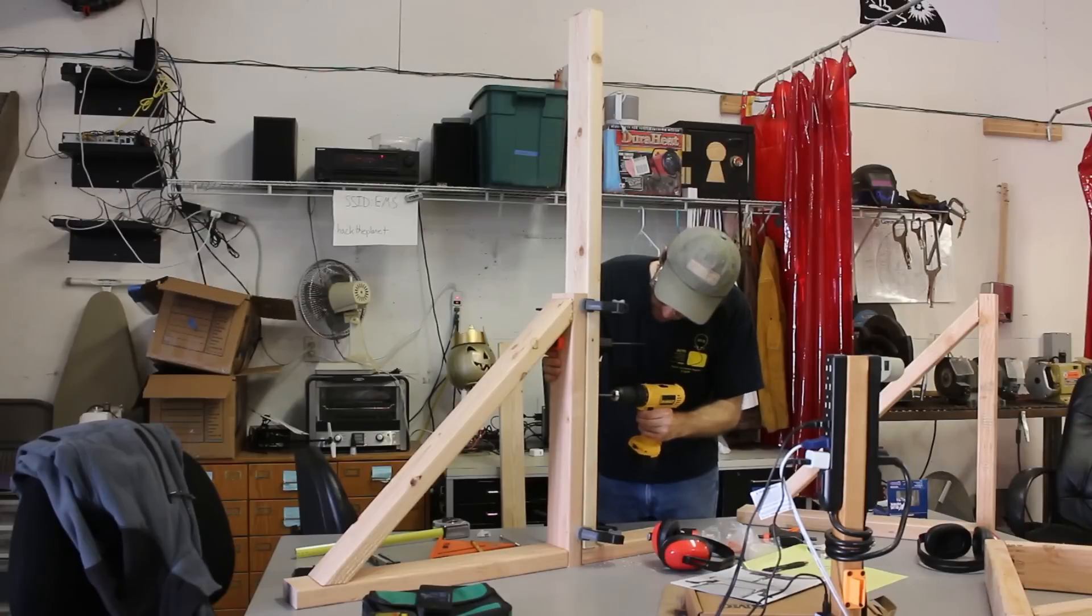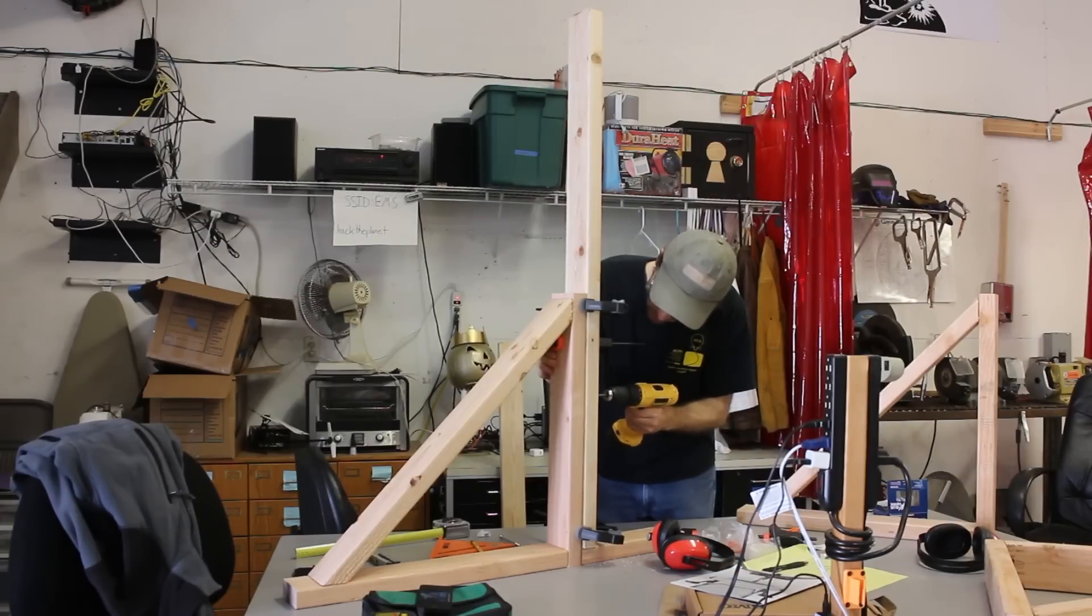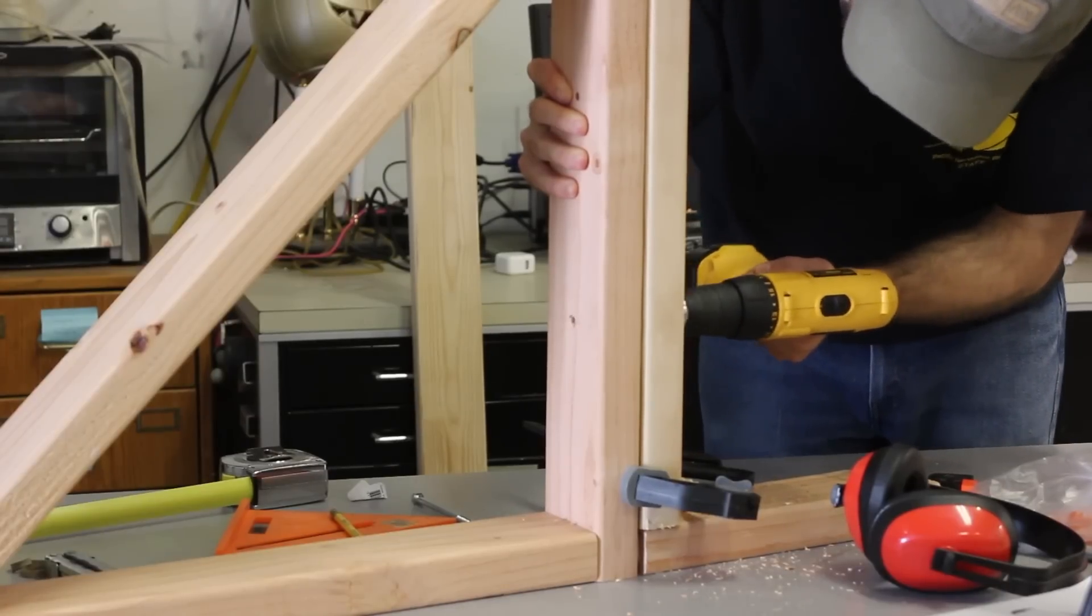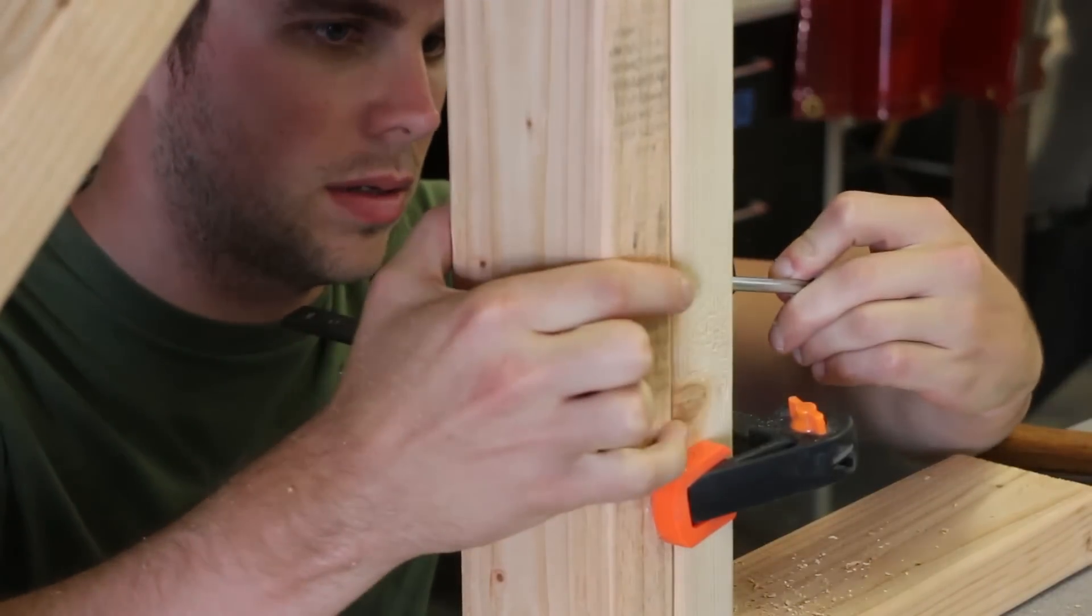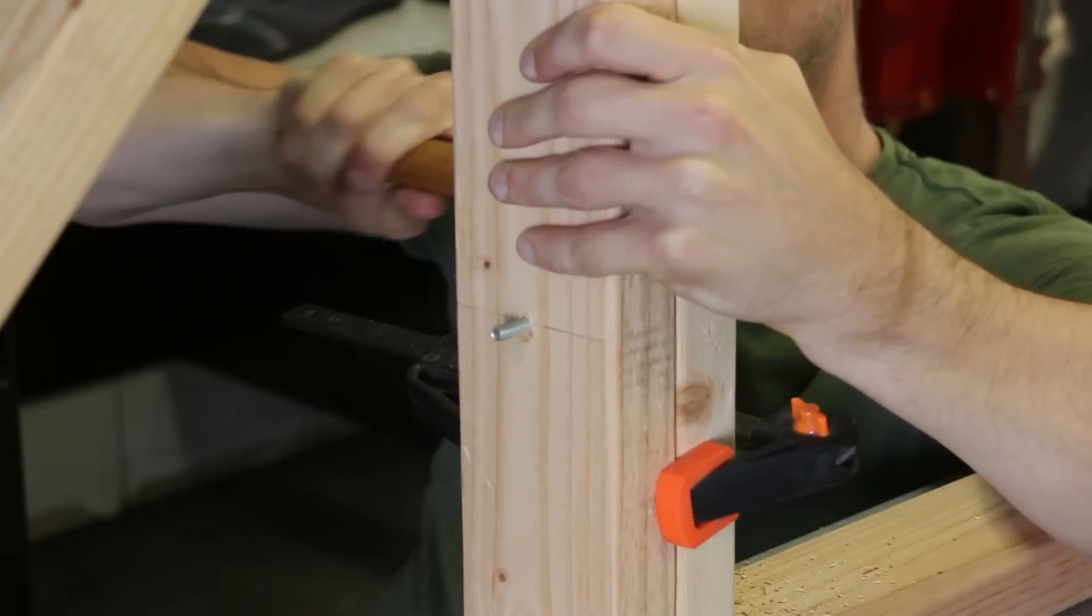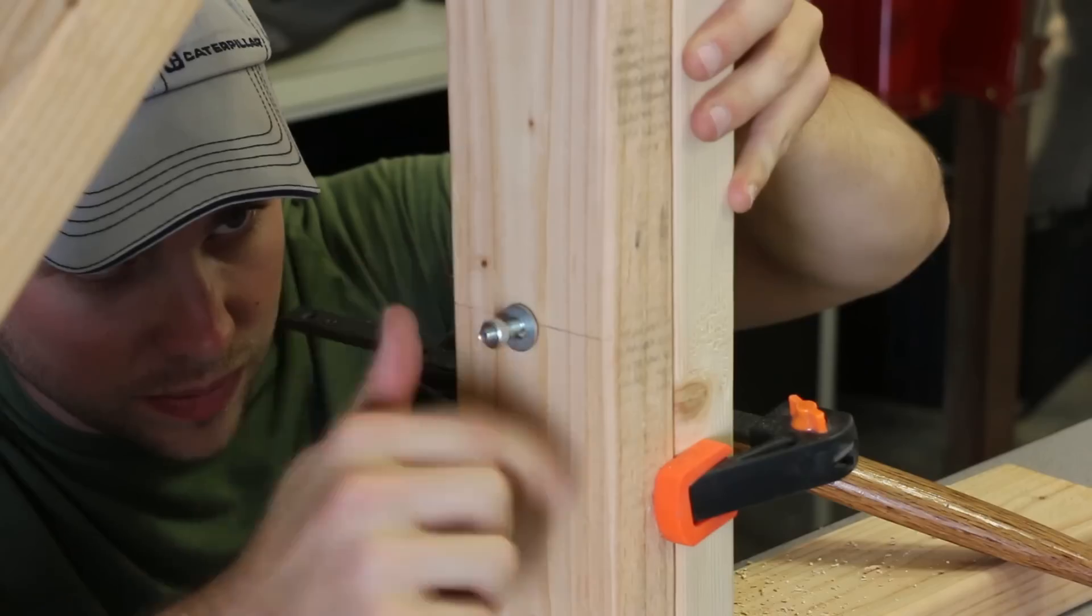Once those were done, we had to bolt them to the upright. We clamped one of the supports to a four foot length of 2x4. Then we drilled two quarter inch holes all the way through. The drill bit just barely made it. Then we pushed through a quarter inch bolt and threaded on the nut.